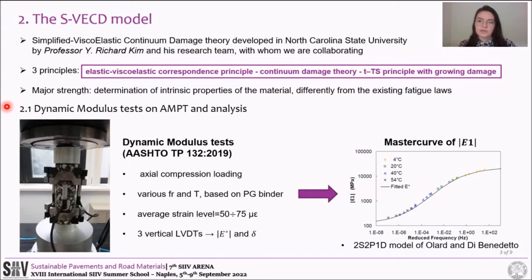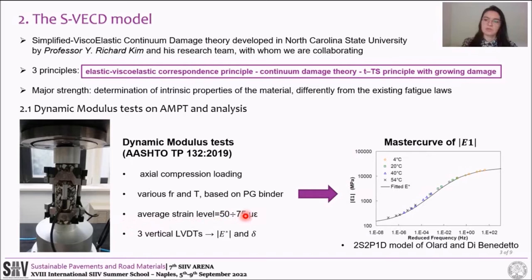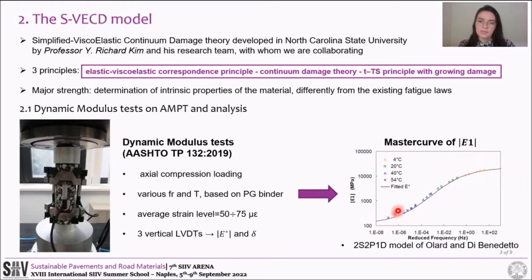Laboratory investigation first includes dynamic modulus tests in axial compression mode of loading at an average strain level set between 50 and 75 microstrain. The experimental dynamic modulus and phase angle data obtained at various frequencies and temperatures are used to determine the storage modulus master curve, applying the 2S2P1D model of Olard and Di Benedetto.